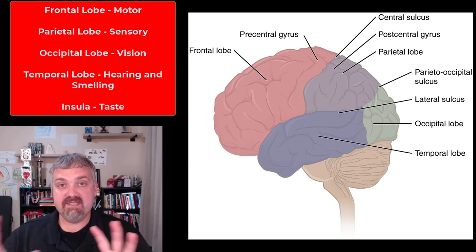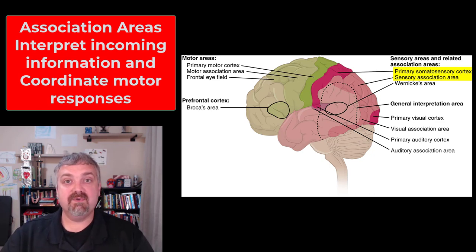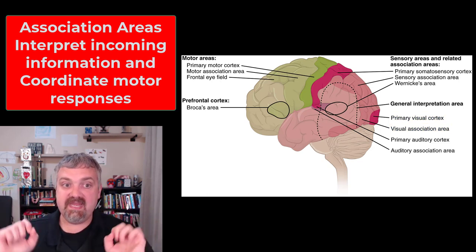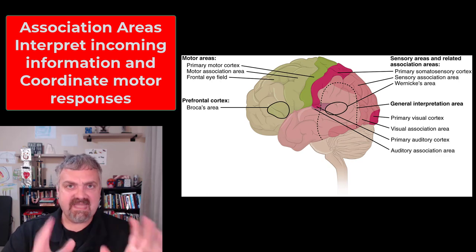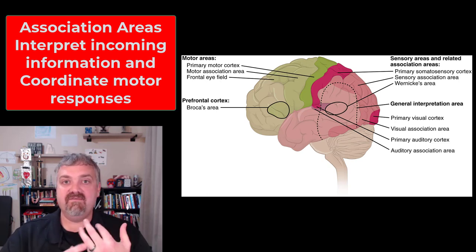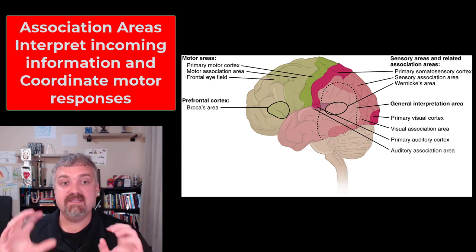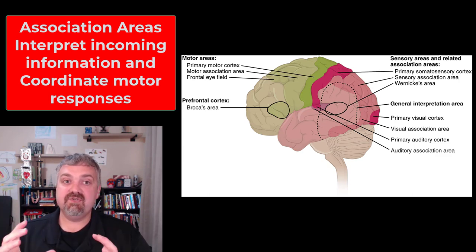Those are your primary areas of the cerebrum that you have to know. But we also have what are called association areas. For example, there's a visual association area in the occipital lobe. These areas interpret incoming information and coordinate responses. So while your primary sensory cortex registers that a sensation is happening at a certain part of your body, the association areas make sense of it — like determining it's your wedding ring and not a bug crawling on your finger. They also interpret what you're seeing, hearing, and smelling.